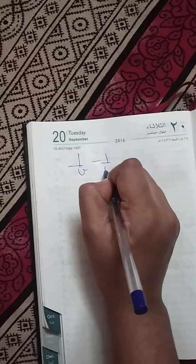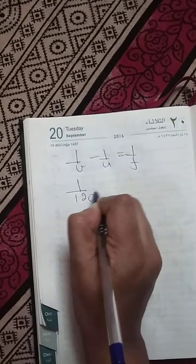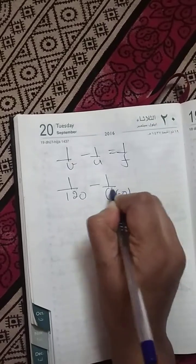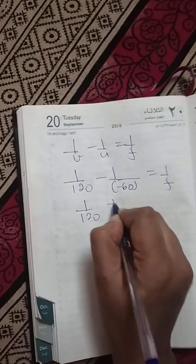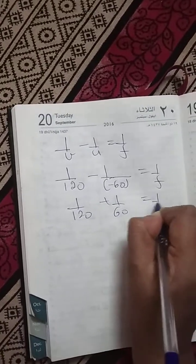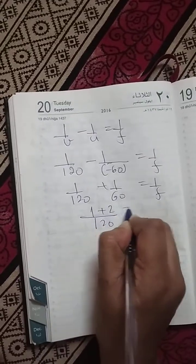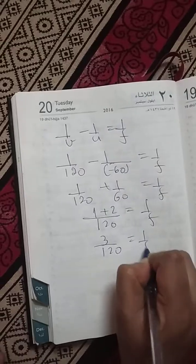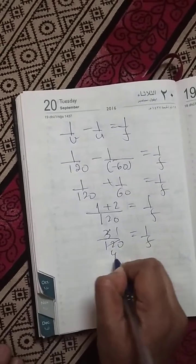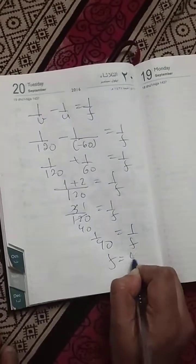Try it. 1 upon V minus 1 upon U equals 1 upon F. What is 1 upon V? It is plus 120. What is 1 upon U? It is minus 60. So 1 upon 120 plus 1 upon 60 equals 1 upon F. LCM will be 120. That is 1 plus 2, that is 3 upon 120 which equals 1 upon F. 3 over 120 is 1 upon 40 equals F. Or F equals 40 cm.